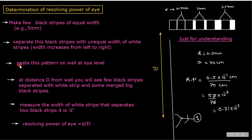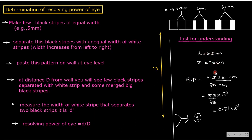We paste this pattern on the wall at eye level. At distance capital D from the wall, you observe the black strips. You move away from the strip pattern, as shown in the diagram. At some distance, some strips merge into one another while others can still be differentiated. The width of the white strip that just separates two black strips you can distinguish is small d, and that distance from the wall is capital D. Resolving power equals small d divided by capital D.